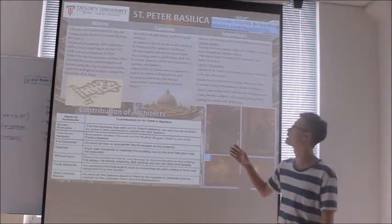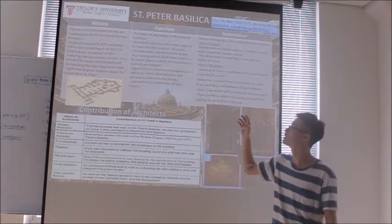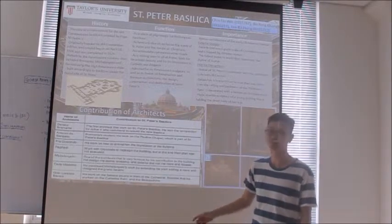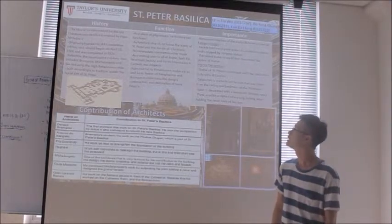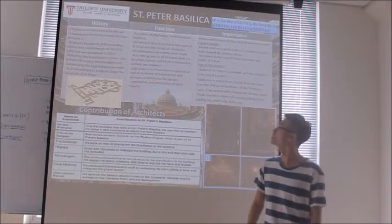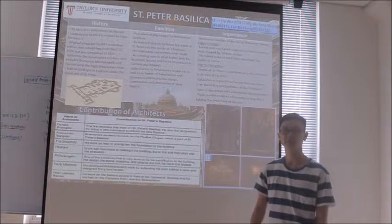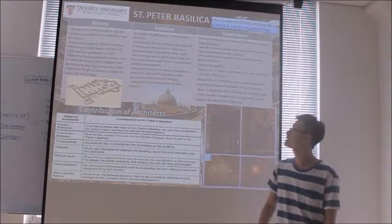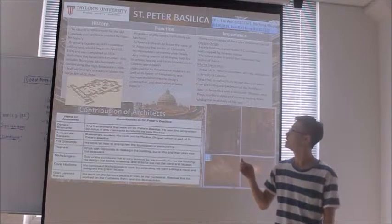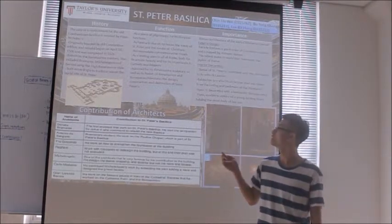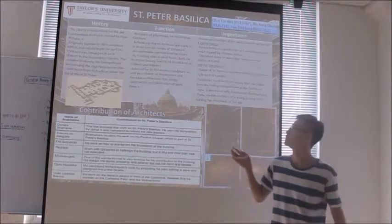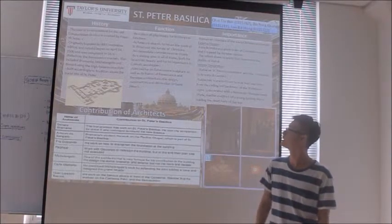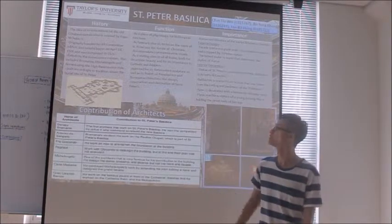The Basilica of St. Peter's functions as a place of pilgrimage for its liturgical functions. It was also viewed as a funeral church to house the tomb of Saint Peter and the tombs of Christians who wished to be buried near him. It is used to accommodate commemorative ritual events such as funerals in memory of those who were there. The basilica is admired for its Renaissance sculpture as well as its fusion of Renaissance and Baroque architecture in design, construction, and decoration. It has become a top visiting spot for tourism in all of Rome, both for its artistic beauty and for its importance to Catholic worshippers.